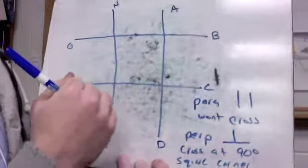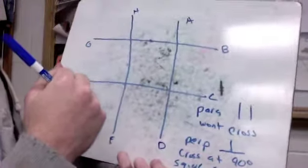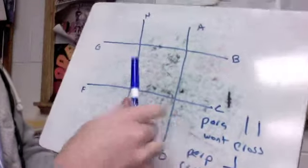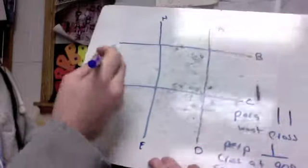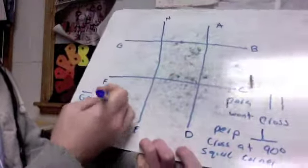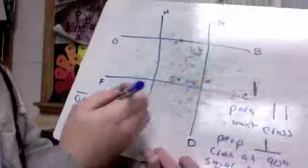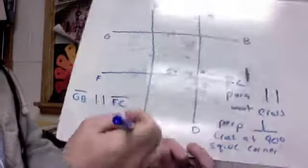Now if we look at the diagram let's pick out a few here. A few examples of parallel would be segment GB which would be right here would be parallel to segment FC. So I can write that like this.